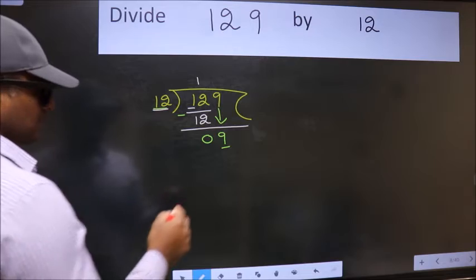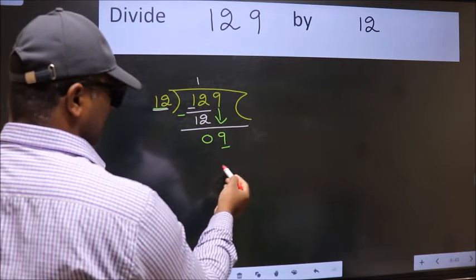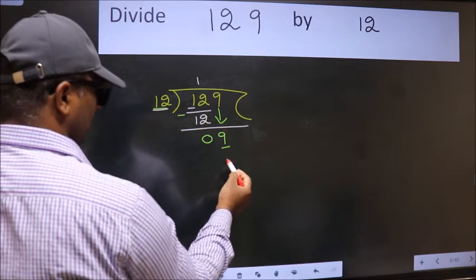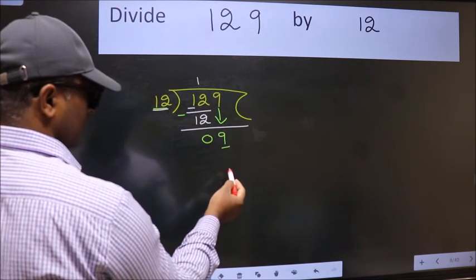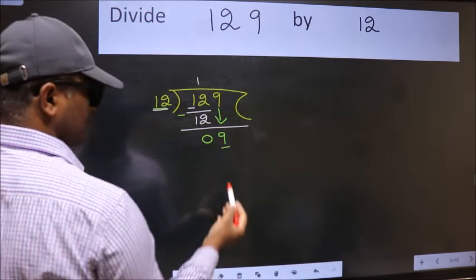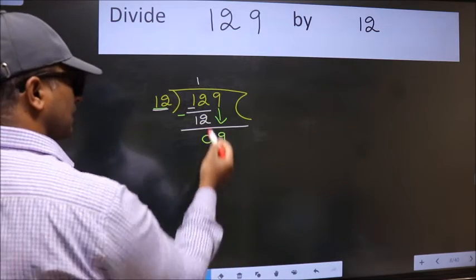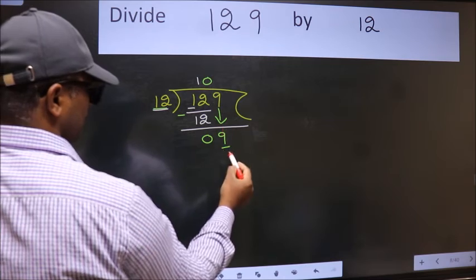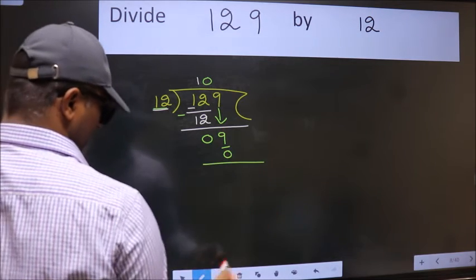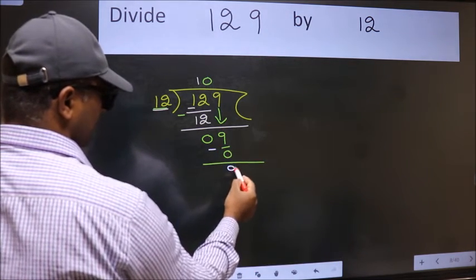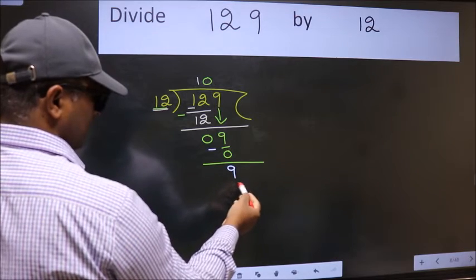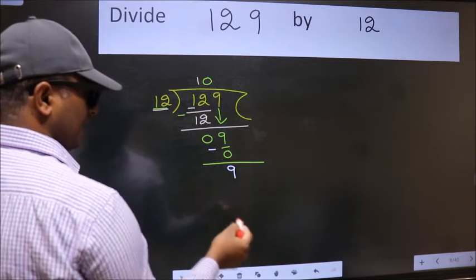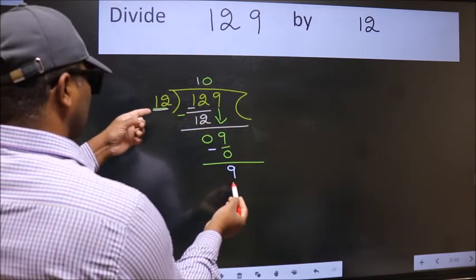Instead of that, what we should think of doing is which number should we take here. If I take 1, we will get 12, but 12 is larger than 9. So what we do is we take 0 here. So 12 into 0, 0. Now we subtract, we get 9. Over here we did not bring any number down and 9 smaller than 12.